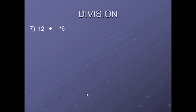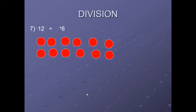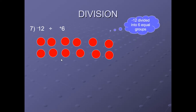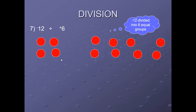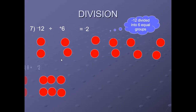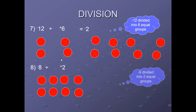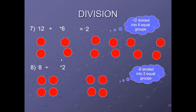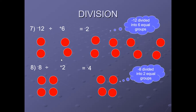Now minus 12 ÷ 6: take 12 negative coins and divide equally into 6 groups — 1, 2, 3, 4, 5, 6. Each group contains 2, so the answer is minus 2. For minus 8 ÷ 2: take 8 negative coins divided into 2 groups; each group contains 4, so the answer is minus 4. In this way, we divide integers using coin activities. Students, try to create new questions and solve them.